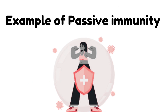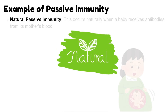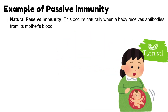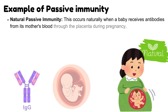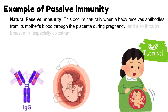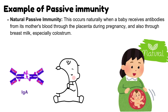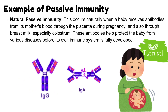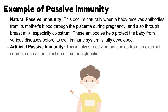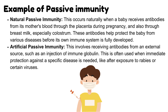Examples of passive immunity: Natural passive immunity occurs when a baby receives antibodies from its mother's blood through the placenta during pregnancy and also through breast milk, especially colostrum, helping protect the baby from various diseases before its own immune system is fully developed. Artificial passive immunity involves receiving antibodies from an external source, such as an injection of immune globulin, often used when immediate protection against a specific disease is needed, like after exposure to rabies or certain viruses.